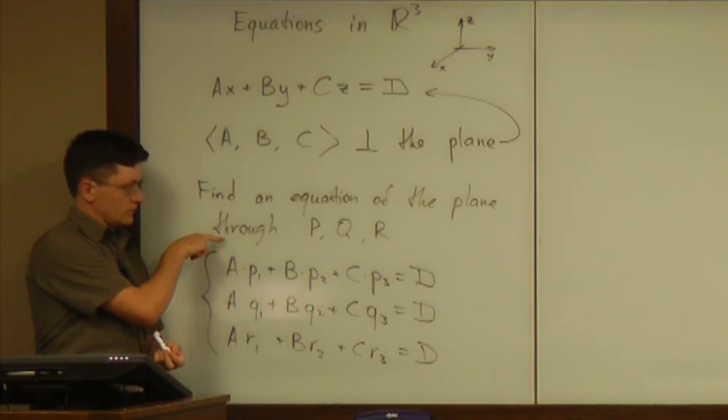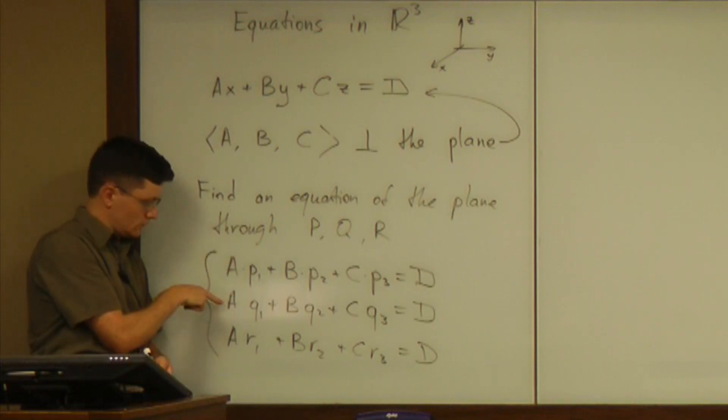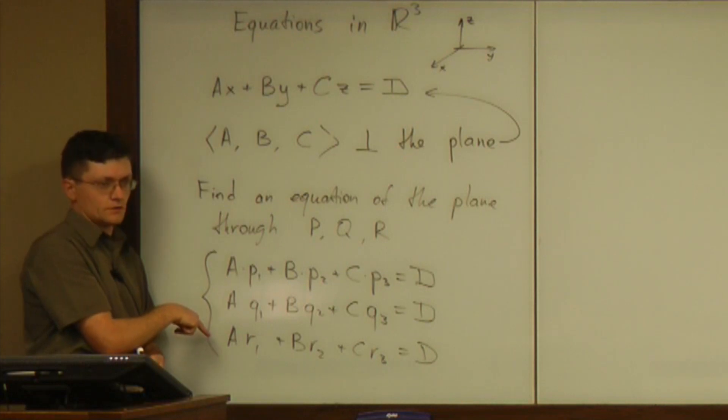And now we interpreted this geometric question purely algebraically. We have to solve a system of three equations, and how many unknowns are there? Four. Four. Don't we have four unknowns?